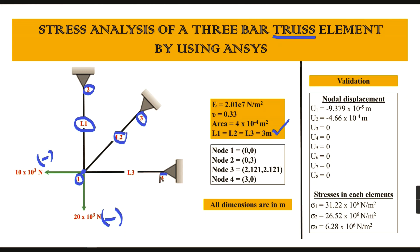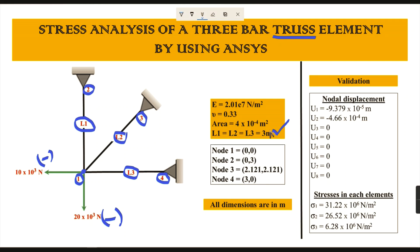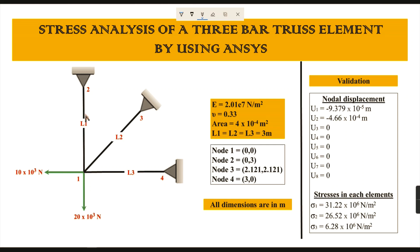We also connect one more bar, a link from node one to node four, and the distance L3 is again three meters. All dimensions are in meters. The cross-sectional area for this truss element is the same for links 1, 2, and 3 — it is given as 4 × 10⁻⁴ m².